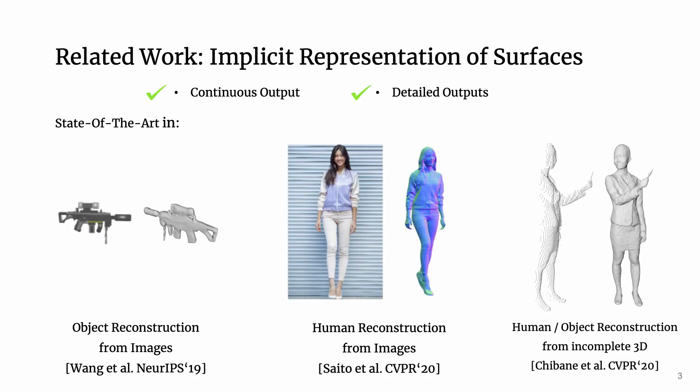Recent work on implicit function learning is relevant for this problem. It shows state-of-the-art performance and produces continuous and detailed reconstructions. However, these works are limited by the shapes they can output. Let me explain why.